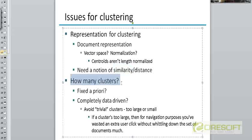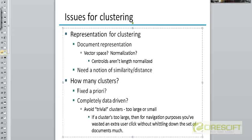The other thing we have to decide when we want to do clustering is how many clusters we want to come up with. Many of the clustering algorithms assume that you have predefined, a priori, how many clusters you want to divide your collection into. That number will be fixed and the algorithm will use that number for clustering the documents.